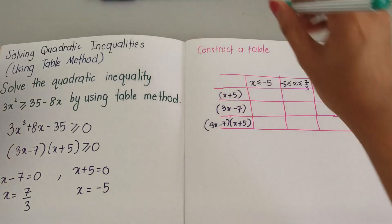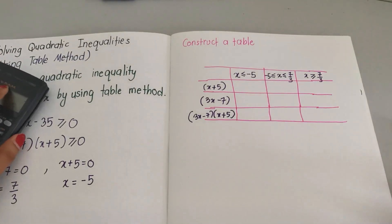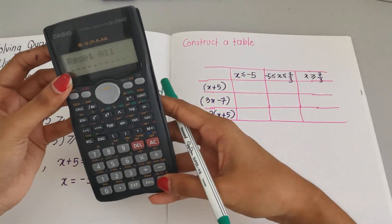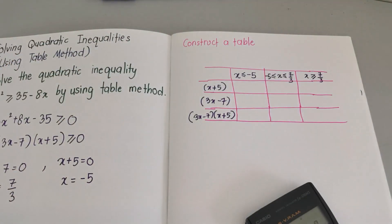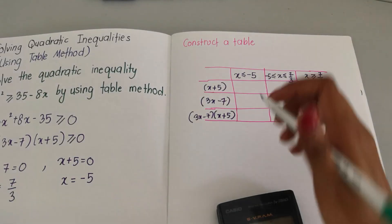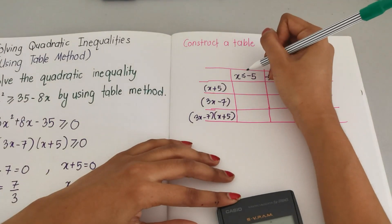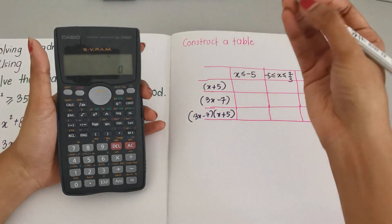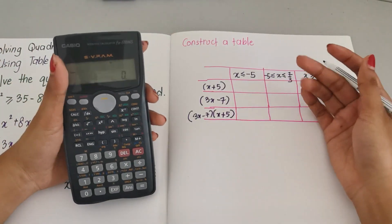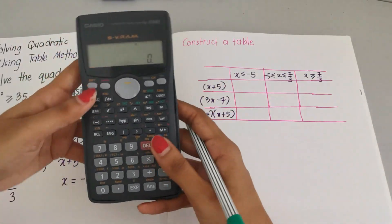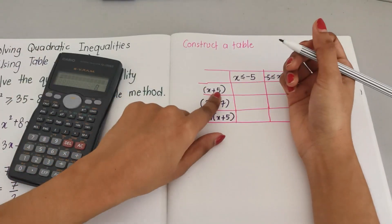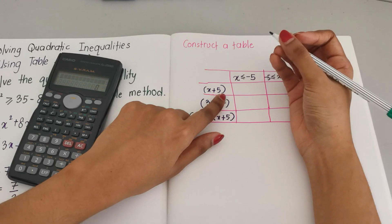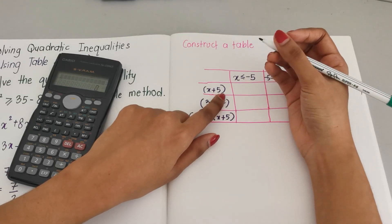Now since we already constructed our table, this is where we're going to use our calculator. Choose any number that is less than negative 5. For example, I'm going to choose negative 6. Put in negative 6: negative 6 + 5.